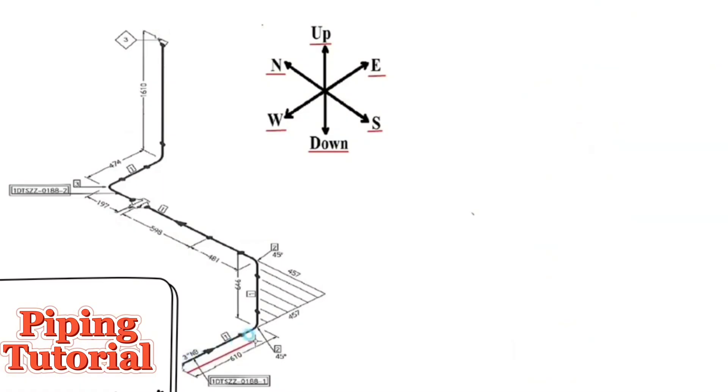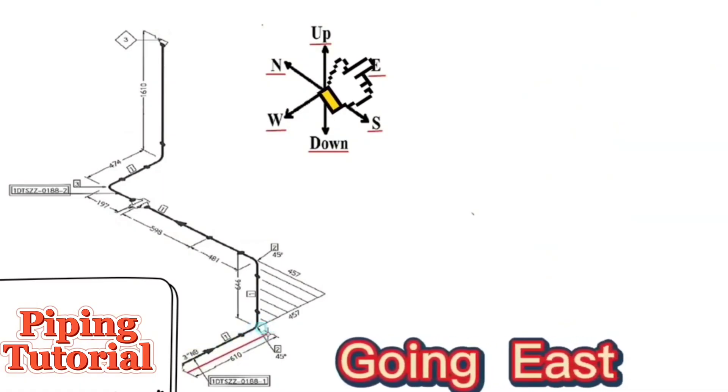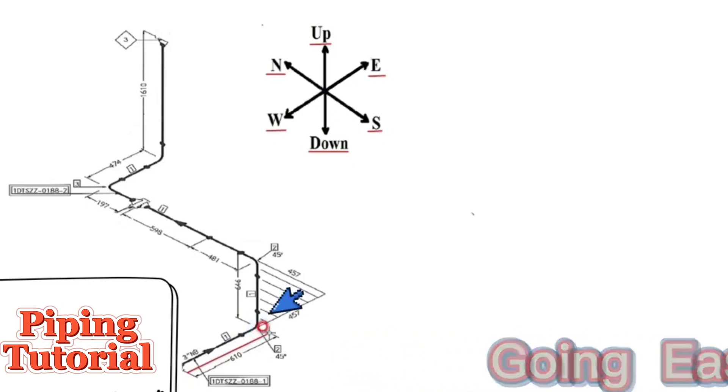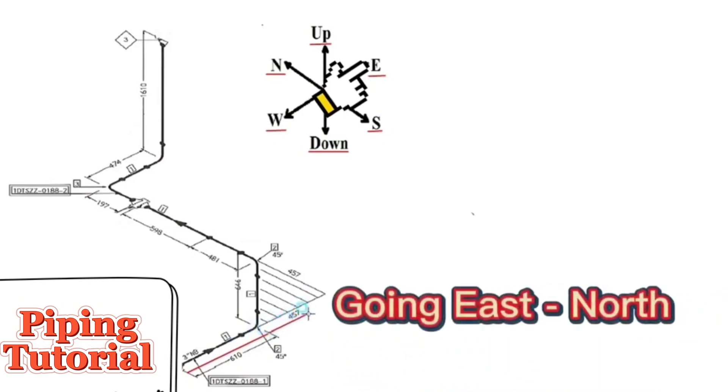The pipe travels start from this point to the east direction. There is angle of 45 degrees. Therefore, the pipe travels to the east, then it travels north direction at an angle of 45 degrees.